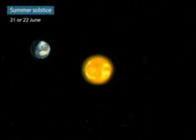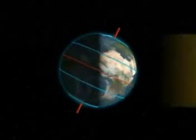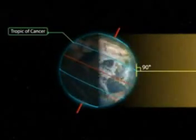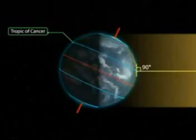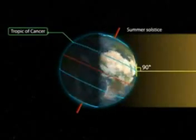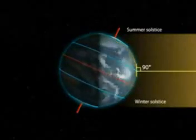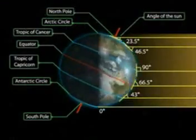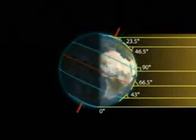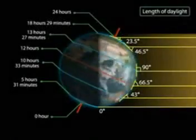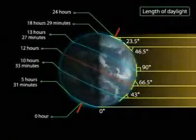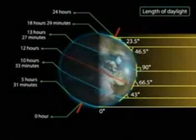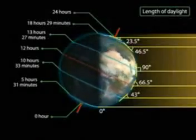Summer solstice. On the 21st or 22nd of June, the overhead Sun is over the Tropic of Cancer. It receives the largest amount of solar radiation. At this time, the northern hemisphere is in the summer solstice, while the southern hemisphere is in the winter solstice. The angle of the Sun decreases towards the poles. On this day, the length of daytime of the northern hemisphere is the longest in the year, while that of the southern hemisphere is the shortest in the year.